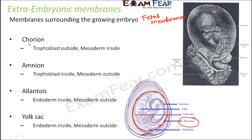Chorion is made up of trophoblast on the outside and mesoderm on the inside. Recall that there are three germ layers: ectoderm, mesoderm, and endoderm. Trophoblast is the outer cellular layer of the blastocyst. So chorion has trophoblast outside and mesoderm inside.